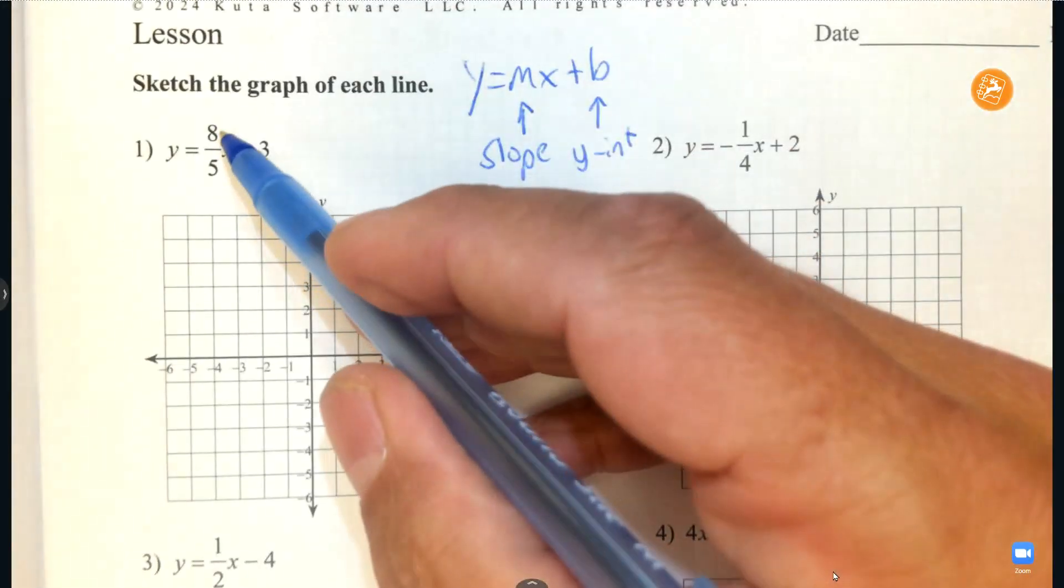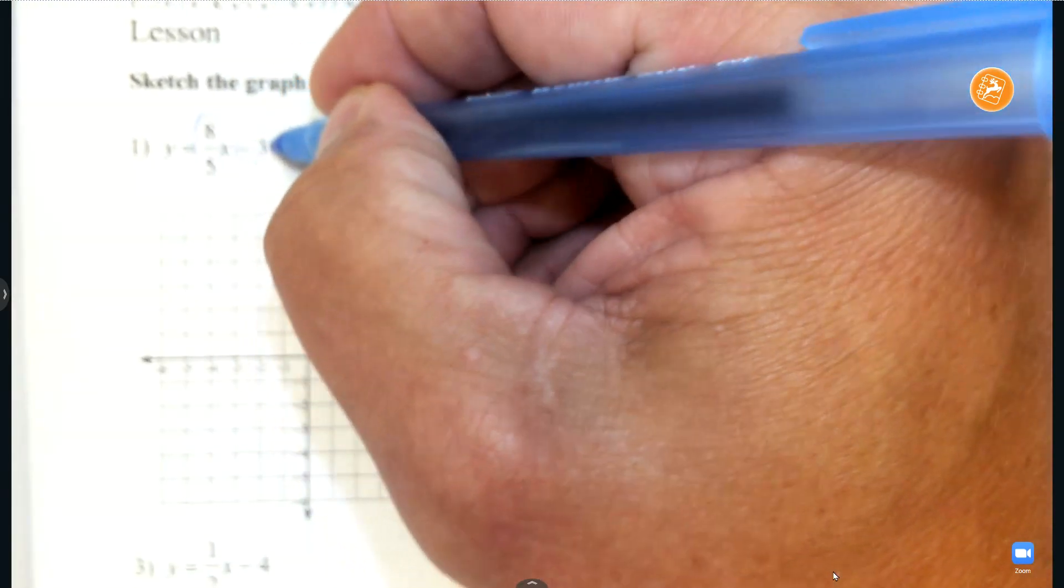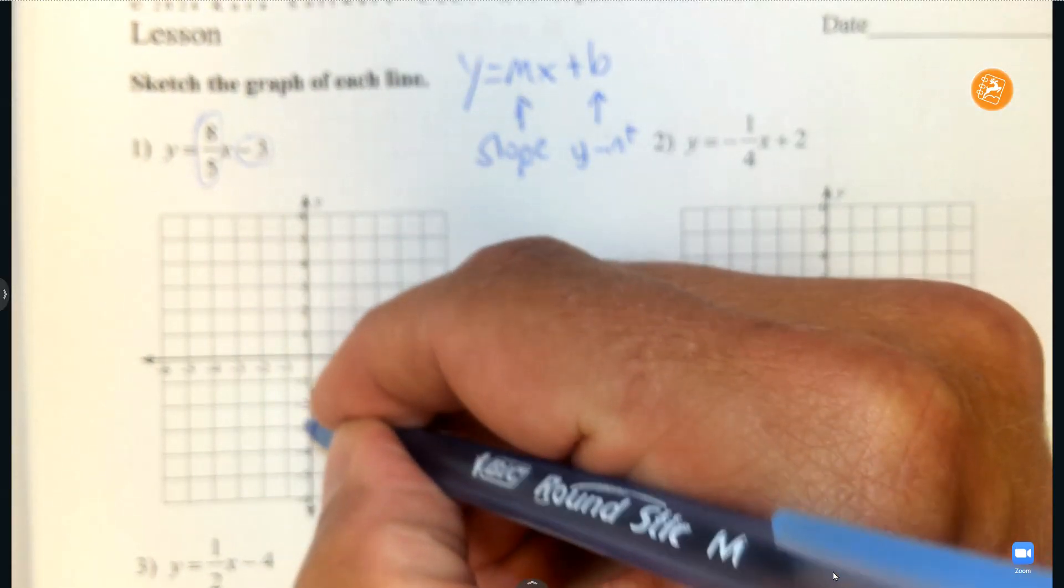b is the y-intercept, and then we're going to graph it. So for 8 over 5x, this number is my slope. This number is my y-intercept. So on the y-axis, I find negative 3. Put a point down.